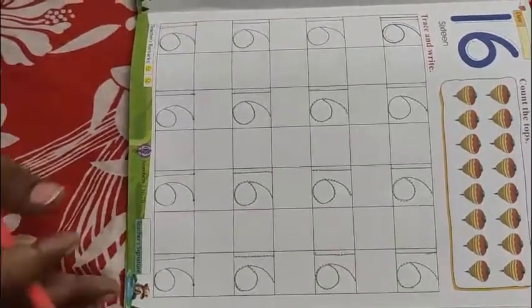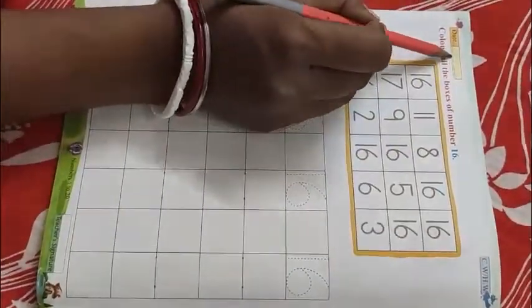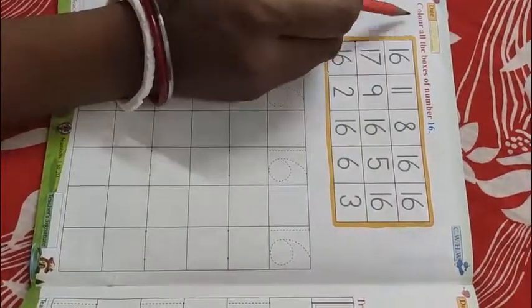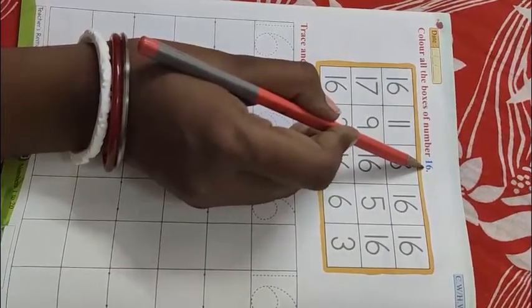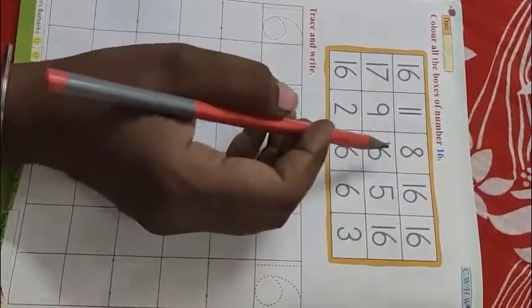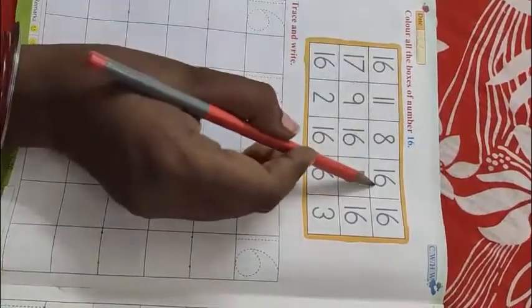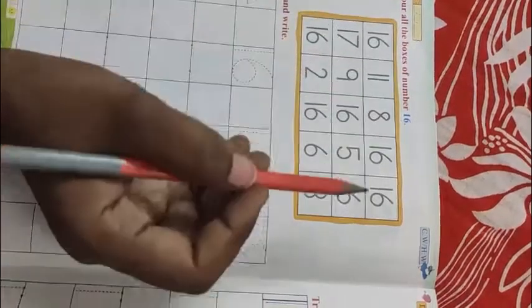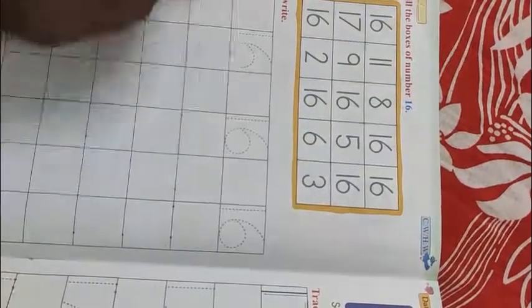Very good. Now move to the next page. Here we will get homework. This page you will do as homework. Here you will write the date and you will put tick mark on HW homework. So here what is saying, here color all the boxes of number 16. So you have to color here those boxes are having number 16. You have to find out here 1, 2, 3, 4, 5, 6, 7 boxes. So you will find out how many boxes are here of 16 number and then you have to fill the color. Any color you will fill up.